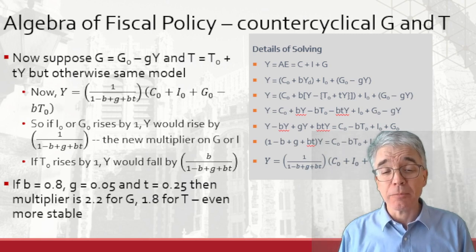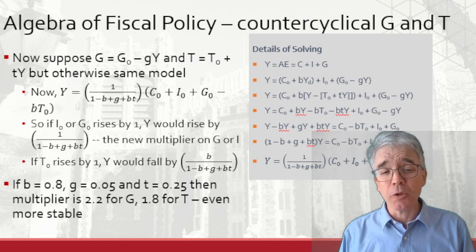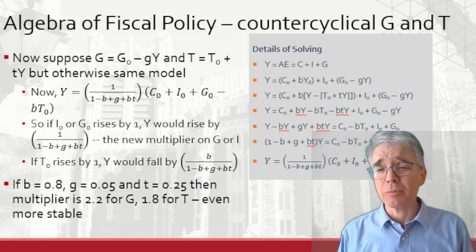For example, if B is 80%, G is 5%, T is 25%, then the multiplier goes all the way down to just 2.2, down from 5 before the automatic stabilizers.